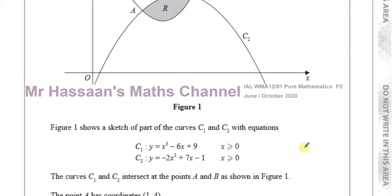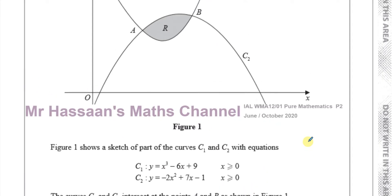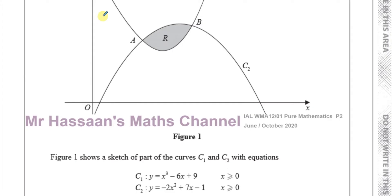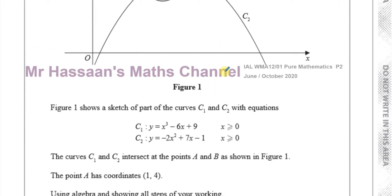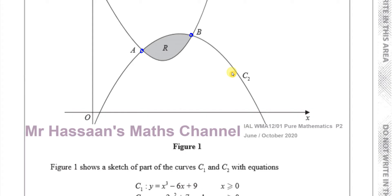The curves C1 and C2 intersect at the points A and B as shown in figure 1. The point A has coordinates (1, 4), and we have to find the coordinates of point B.